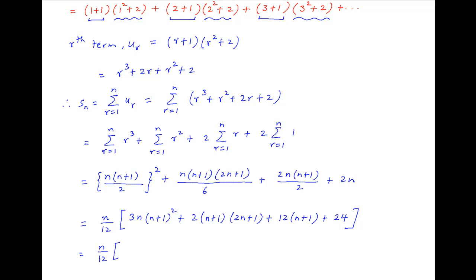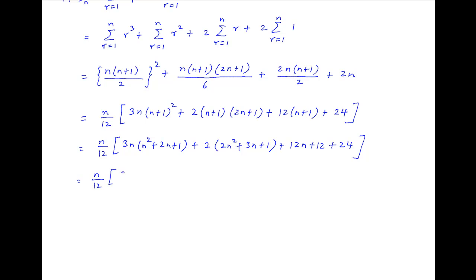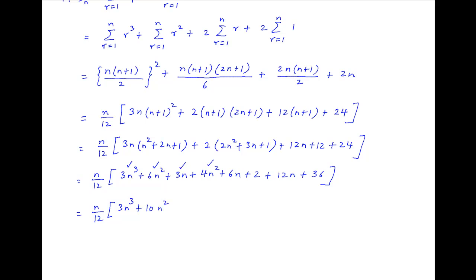And this is equal to n upon 12 times in brackets 3n times in brackets n square plus 2n plus 1, plus 2 times in brackets 2n square plus 3n plus 1, plus 12n plus 12 plus 24. And this is equal to n upon 12 times in brackets 3n cube plus 6n square plus 3n plus 4n square plus 6n plus 2 plus 12n plus 36. And therefore Sn is equal to n upon 12 times in brackets 3n cube plus 10n square plus 21n plus 38, and this is the required answer.